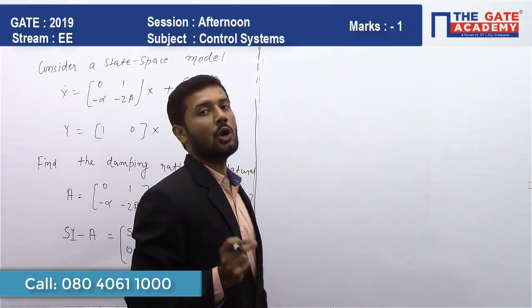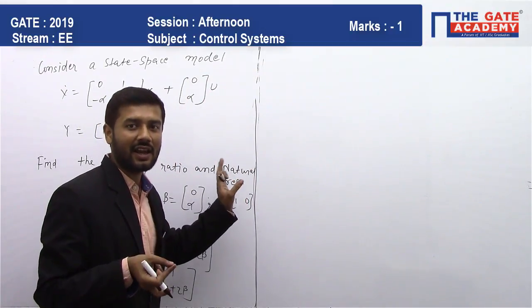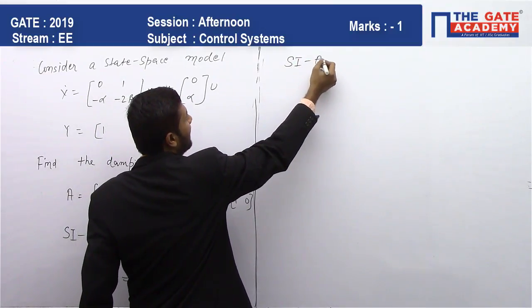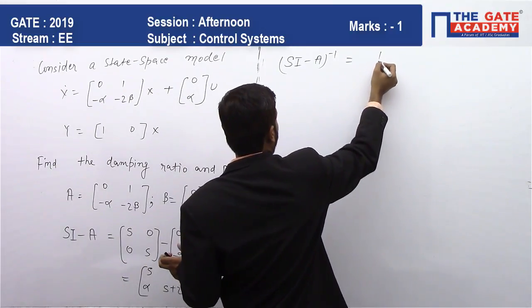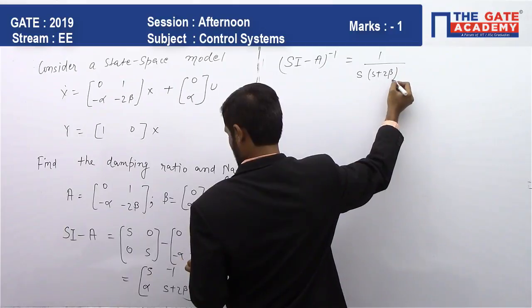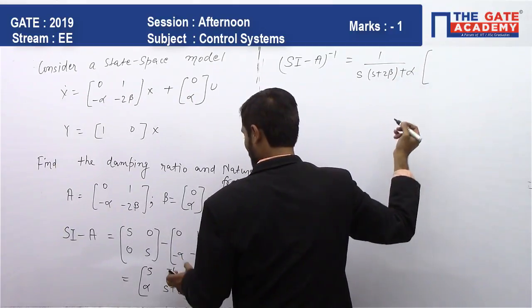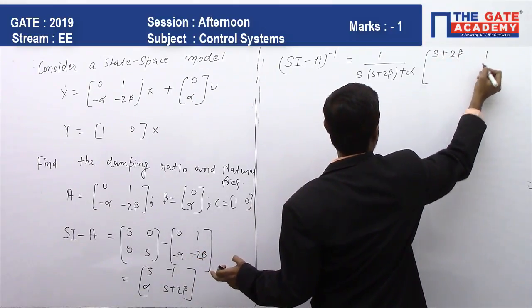Now we will have to find SI minus A inverse. This is a 2 by 2 matrix, we can directly write the inverse. So this is 1/(S*(S+2*beta)+alpha) times [S+2*beta, 1; -alpha, S].